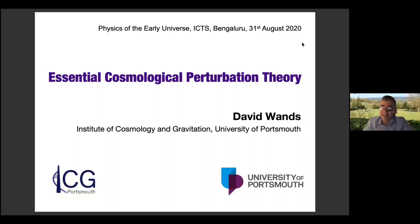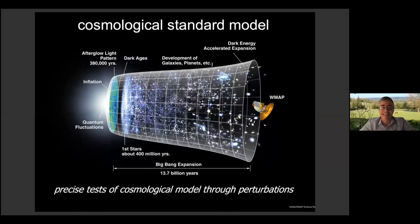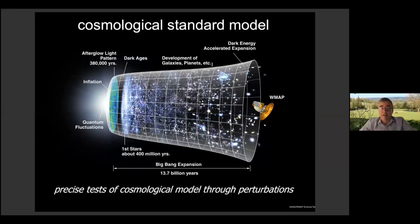This is a topic that has fascinated me since I was a PhD student some years ago. And really, since those days, we've found a surprising model — what has become the standard model of cosmology. As I'm the first speaker, I think I need to show the big picture from this lovely graphic produced by the WMAP team of what has become the standard cosmological model of the evolution of our universe over the last 14 billion years from initial conditions in the very early universe. We have a very consistent picture of the development of structure — the stars and galaxies that we see around us in the universe.